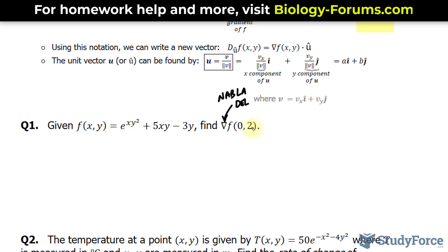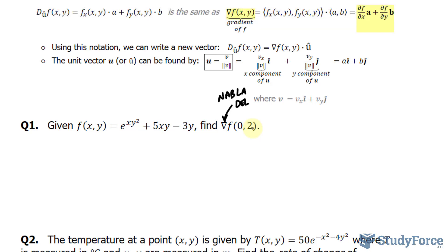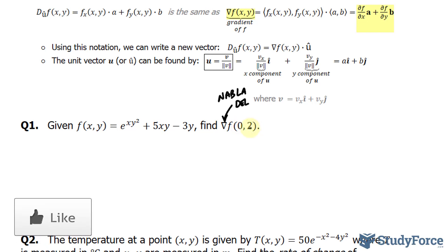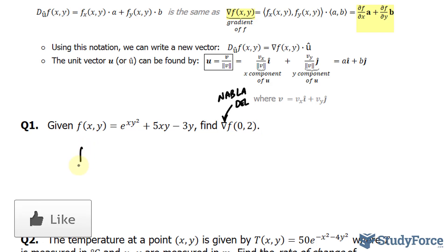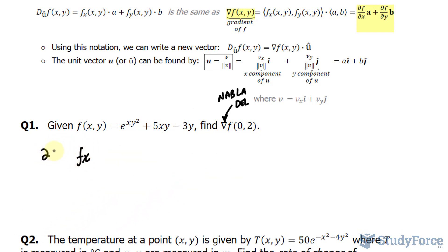In one of our previous videos where we found the directional derivative, which is the same thing as finding the gradient, we had to find the partial derivative with respect to x and the partial derivative with respect to y, and then evaluate those two functions at zero and two. So let's go ahead and do that here. We'll find the partial derivative with respect to x — you can represent this as the partial derivative of f with respect to x, whichever notation you like.